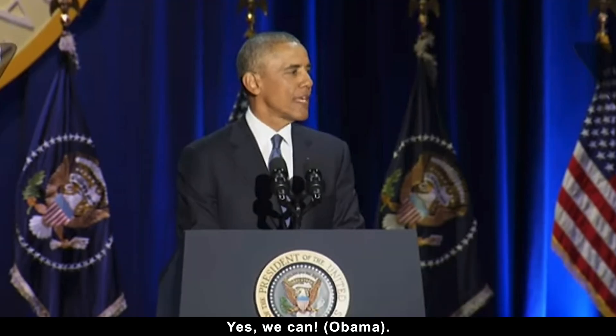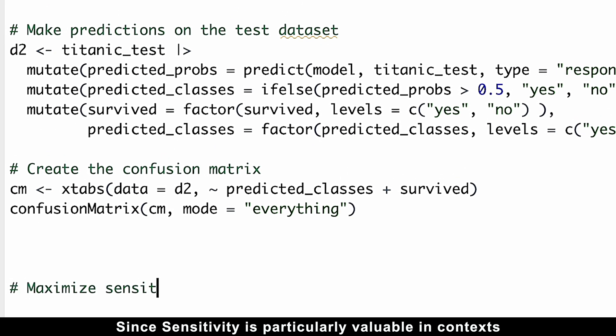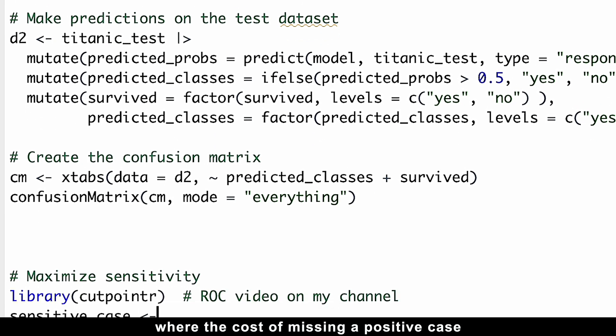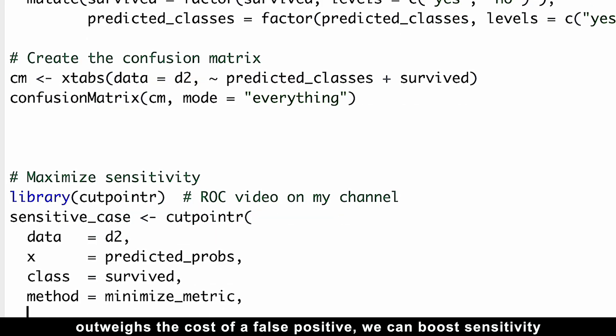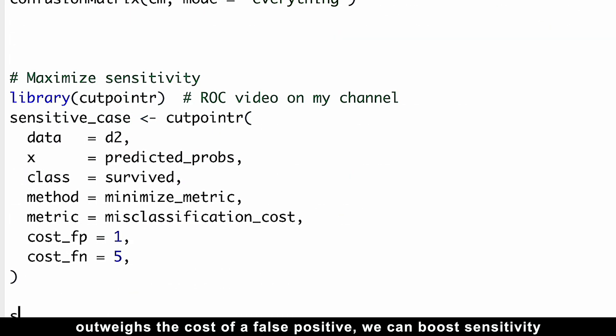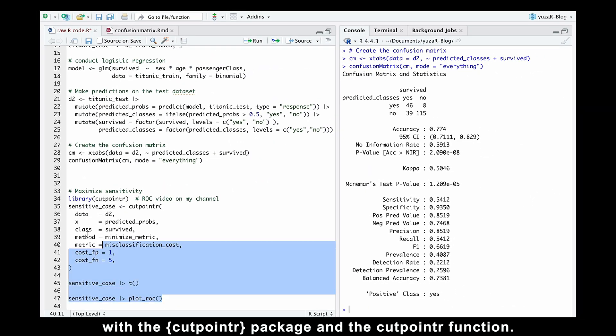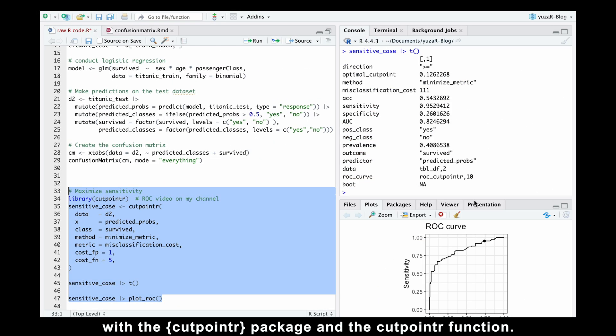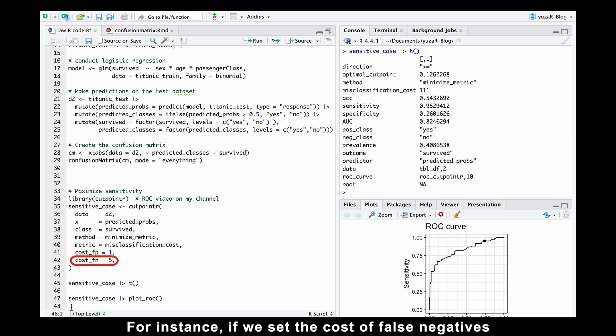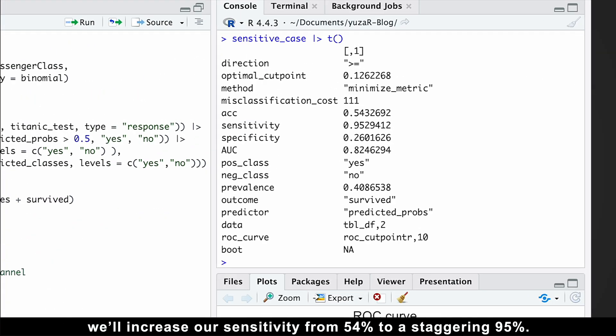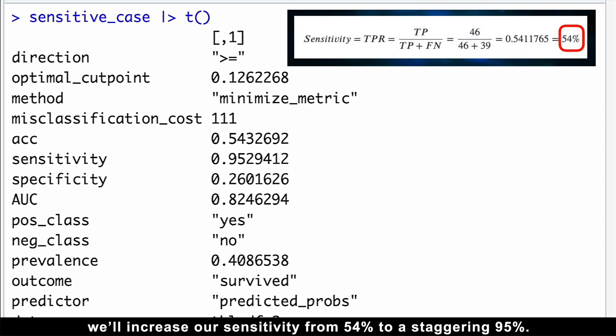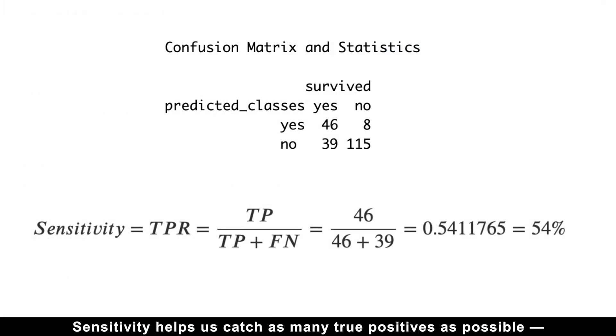So we need to maximize sensitivity and get as few false negatives as possible. Can we do that? Yes, we can. Since sensitivity is particularly valuable in contexts where the cost of missing a positive case outweighs the cost of a false positive, we can boost sensitivity by literally increasing the cost of false negatives with the cutpointer package and the cutpointer function. For instance, if we set the cost of false negatives to 5 times the cost of false positives, we'll increase our sensitivity from 54% to a staggering 95%.